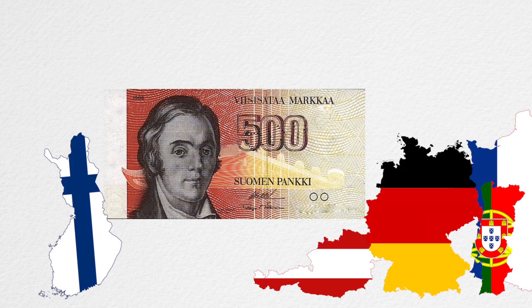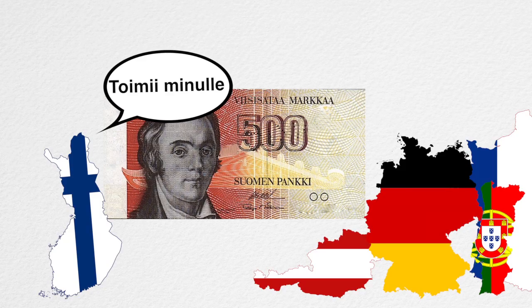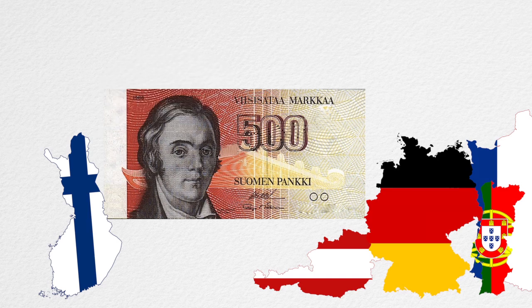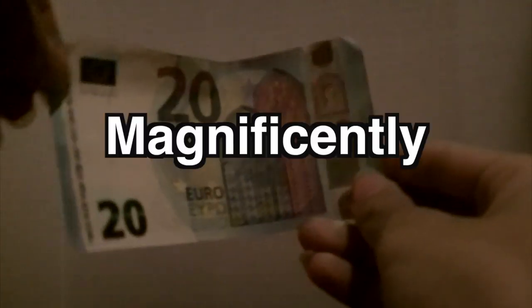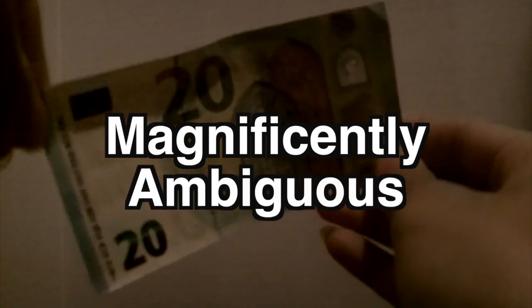This all means that the Euro could not be stylized to fit just one nation. So how does it represent every country in Europe without individually representing any individual country? In short, the Euro does this by being magnificently ambiguous.